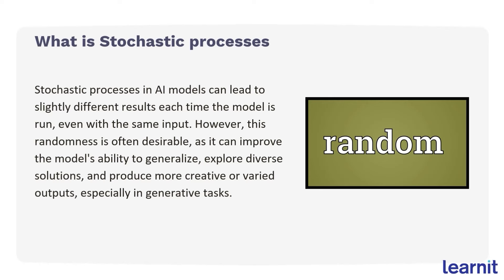A couple of things with Copilot: the way it produces outputs. An input is when you ask it a question, and then the output will be the result or answer to that question. The way it randomizes this is known as a stochastic process. Stochastic process in AI models can lead to slightly different results each time the model is run, so even though we put in the same input, the output might not be word for word the same. This is often desired — we often want randomness so that none of us have the same answers. Just know that if you're following along with this video, you will never get the same answer as me, unless it's something really straightforward like totaling sales.